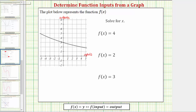Looking at our first example, notice how we're given f of x equals four. Because four is the function value or function output, to determine the value of x or the input that gives this function value, we locate four on the vertical axis, and then we travel horizontally straight to the function — in this case to the left — to this point on the function. To find the input that gives a function output of four, we go straight down to the horizontal axis. Notice how the input is negative three when the function value or output is positive four.